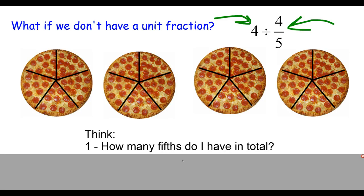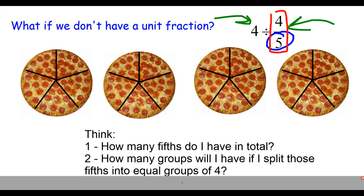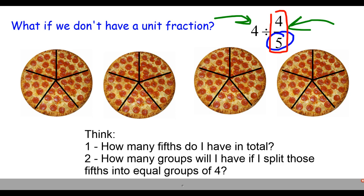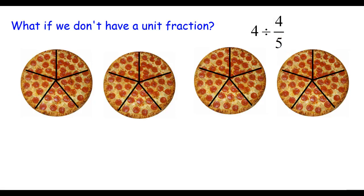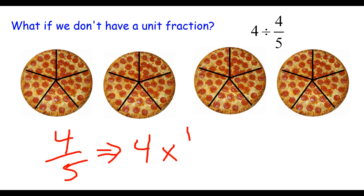The first thing to think is: we're going to split this into fifths because that's our denominator. So the first question is how many fifths do we have in total? That tells us how many slices we have. Then, one of the essential truths about four-fifths comes in this second question: how many groups will I have if I split those fifths into equal groups of four? That's what the fraction four-fifths really means — a group of four fifths of a unit.